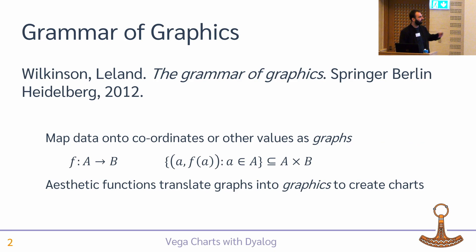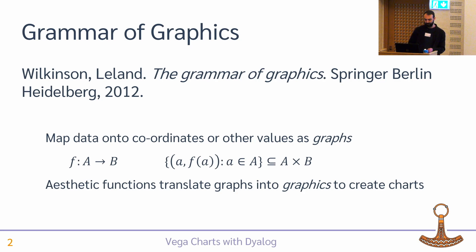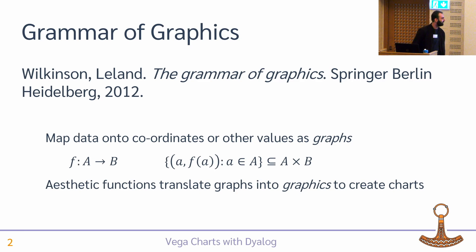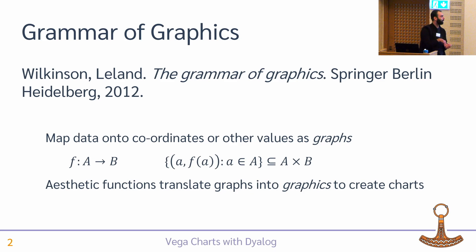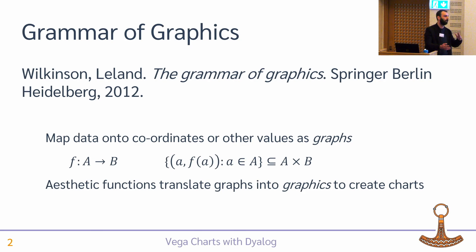The grammar of graphics in broad strokes has two parts: a mathematical step and then an aesthetic step for putting the pretty pictures up. For any function f that maps a set A onto a set B, there's a tuple A and f of A, where A is a member of the set A, and that tuple is a subset of the Cartesian product of the two sets A and B. For our purposes, what it means is you want to take your data values and map them onto some scale — a continuous or discrete range of numbers — and then use those values with aesthetic functions to control the visual properties of the marks: the length of a line, the thickness of it, the color, and so on.